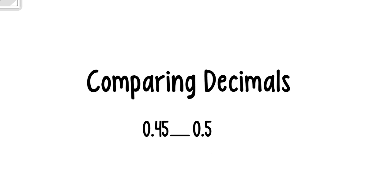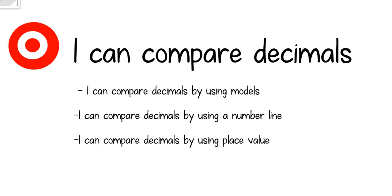Hello everyone, today we are going to learn how to compare decimals. By the end of this lesson you should be able to compare 45 hundredths to 5 tenths and tell me which one is bigger. Our learning targets for the day are: I can compare decimals using models, I can compare decimals using a number line, and I can compare decimals using place value.